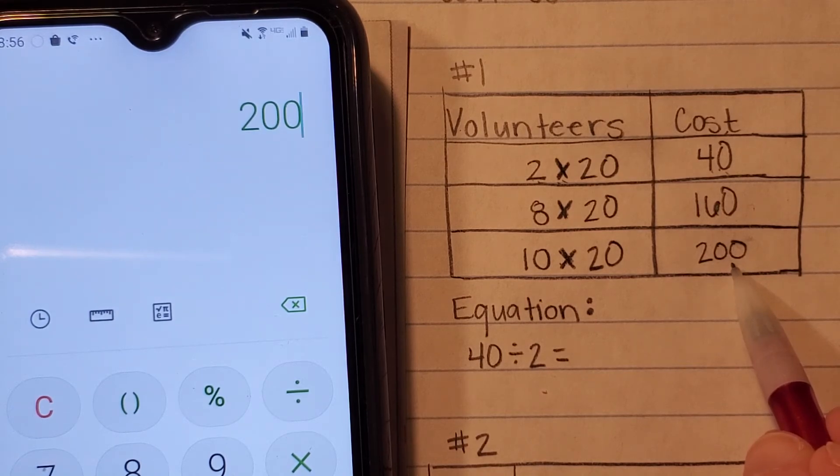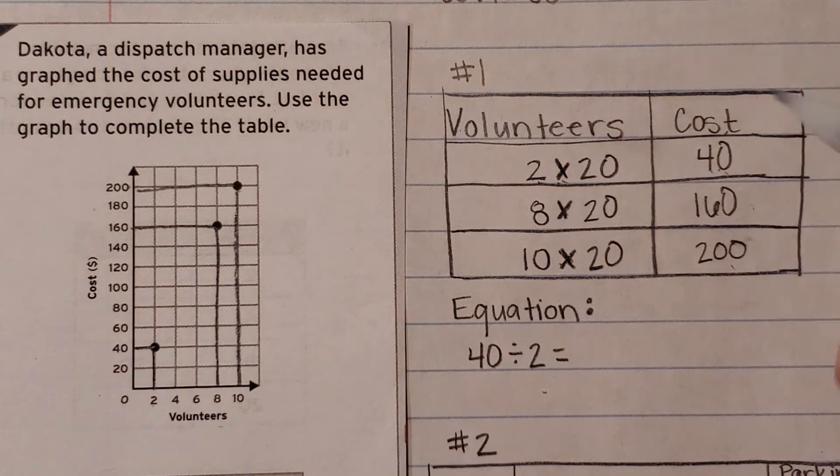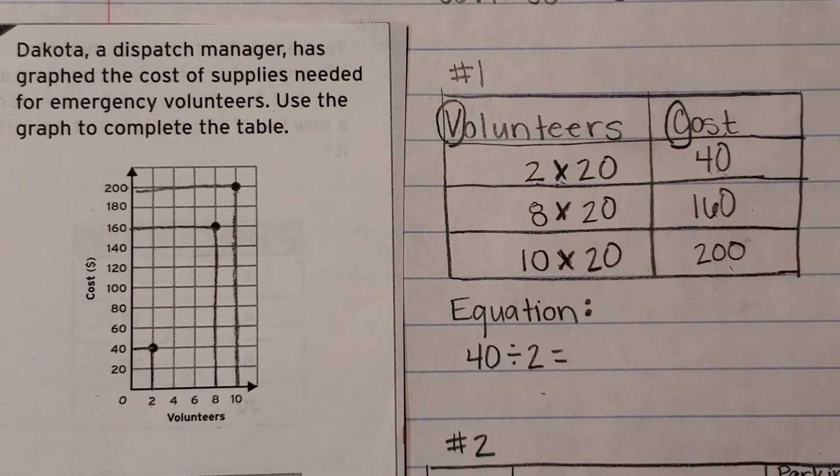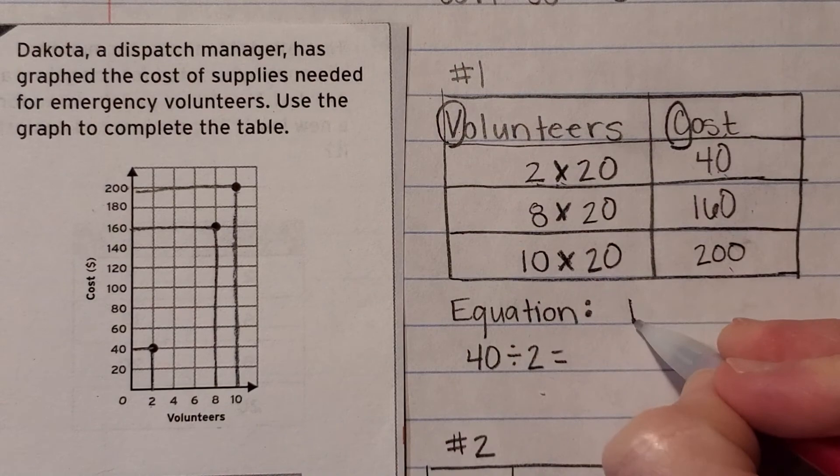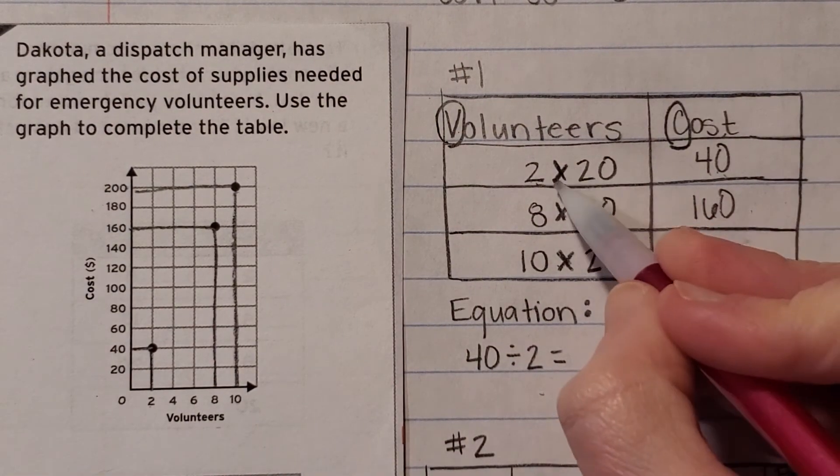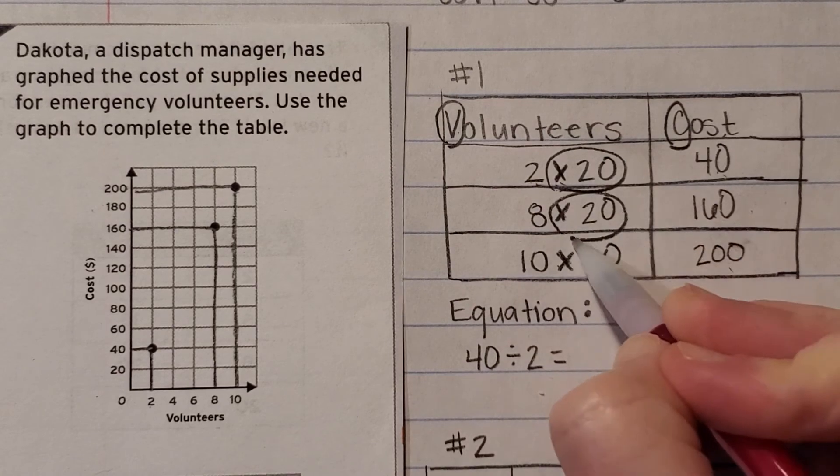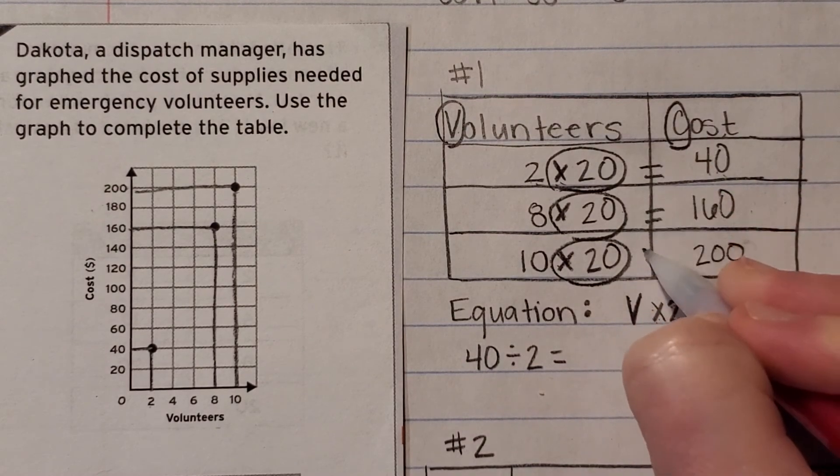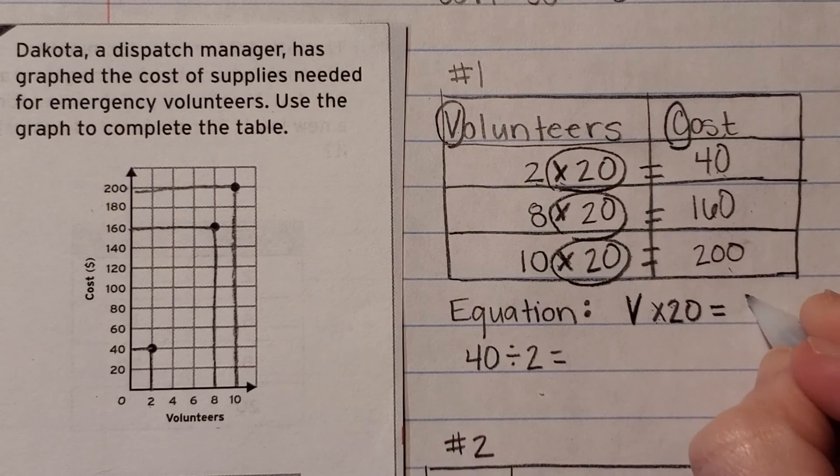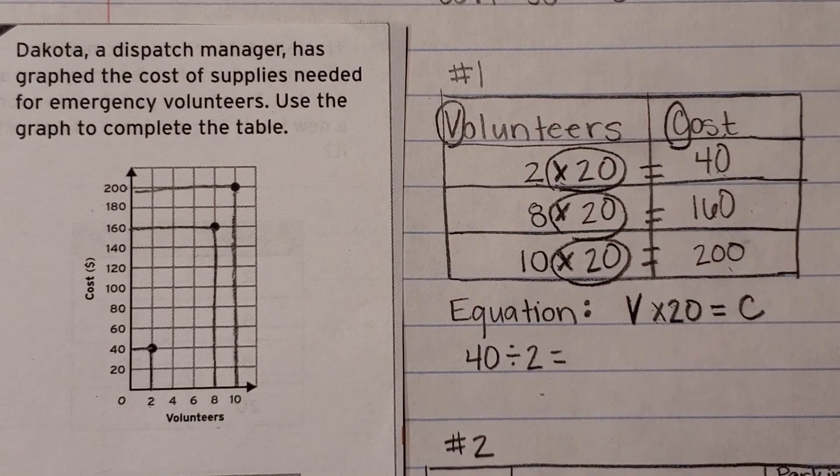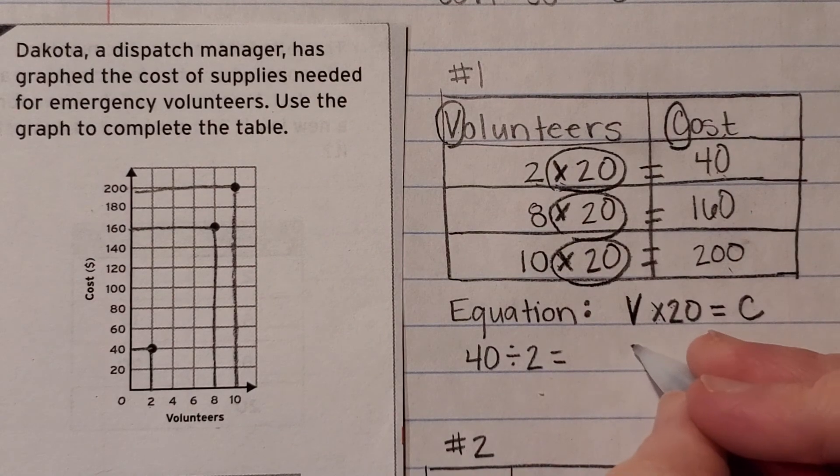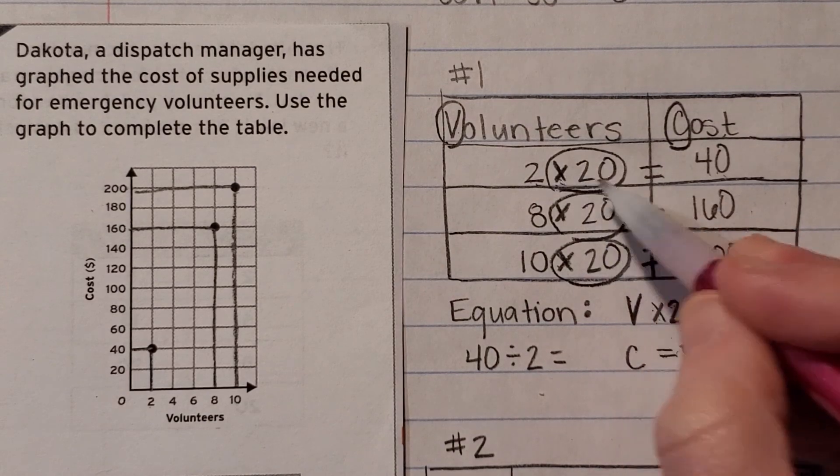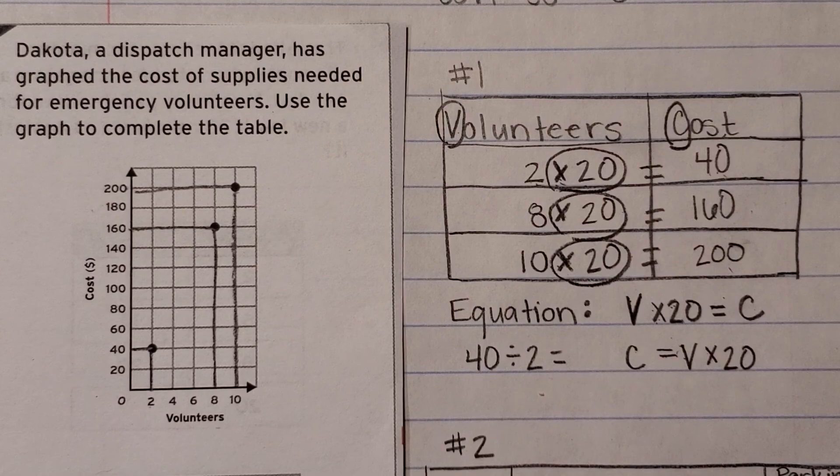So now we're ready to go ahead and write our equation. Remember we're going to use the first letter in each word. So I'm going to use a V for volunteer and a C for cost. One way I can write this is I took my volunteers or number of volunteers and I multiplied it by twenty every single time. So volunteers times twenty equals, every single time it equals our cost. Just like in the example, I could also flip these around and have that my cost is equal to my volunteers and I'm still multiplying them by twenty. That's question number one.